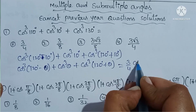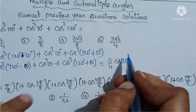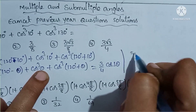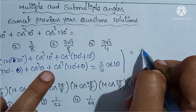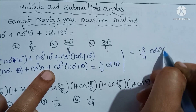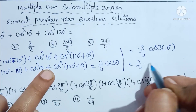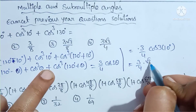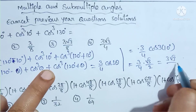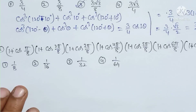So this equals (3/4)cos(3 × 10°) = (3/4)cos(30°) = (3/4) × (√3/2) = 3√3/8. That is option 3.